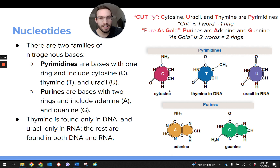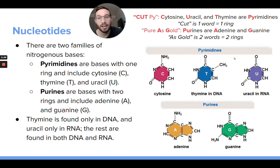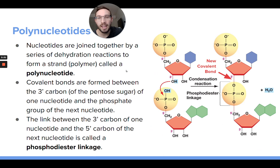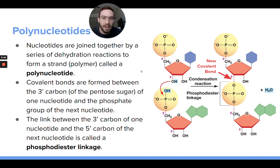Looking at the picture here, this nitrogenous base is a purine because it has a two-ring structure. Those nucleotides bond together over and over again to build polynucleotides, or DNA strands.